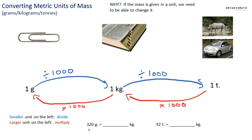Let's try it out. 320 grams equals how many kilograms? I have 320 grams and I need to find kilograms. We're going from grams to kilograms, so we divide by 1,000. Grams is the smaller unit on the left, so we divide: 320 divided by 1,000 equals 0.320 kilograms. That's it!